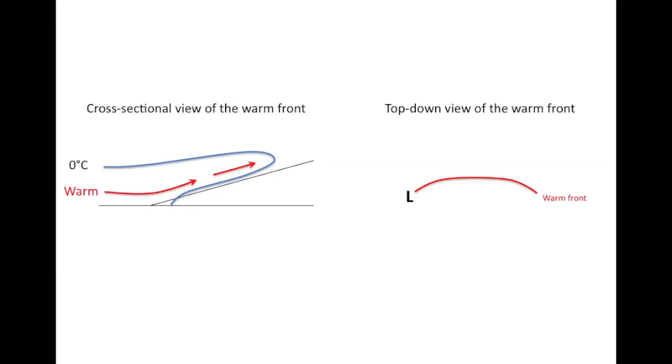Now, we know that whenever we lift warm, moist air, it's going to be very efficient at producing clouds and precipitation. And to the east of the low-pressure system where the warm air is advecting or being pushed over this retreating cool wedge of air, it's going to be very good at making precipitation.